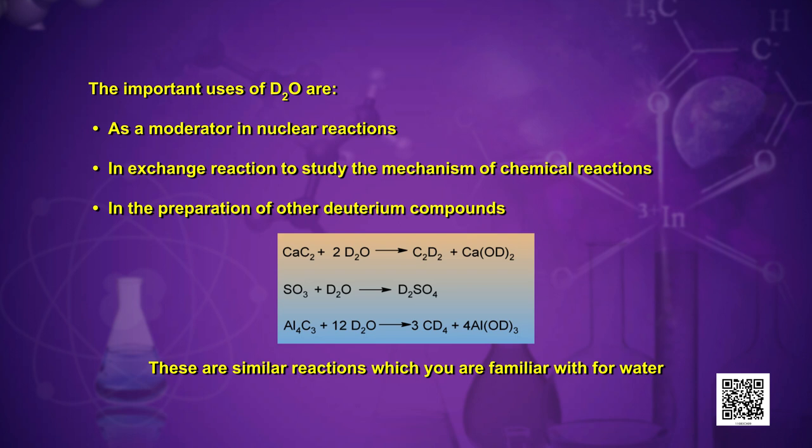Had H₂O been there, you would have got H₂SO₄, sulfuric acid — and this is the corresponding reaction with D₂O. Comparing again with aluminium carbide reacting with D₂O, we get CD₄, a compound corresponding to methane. These are some uses of deuterium oxide or heavy water to get other deuterated compounds.